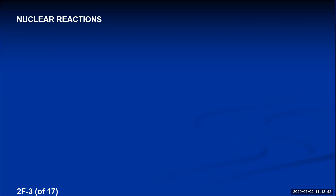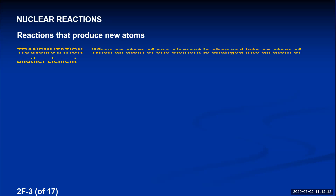Chemistry involves chemical reactions, which are how valence electrons of different atoms interact with each other. Nuclear chemistry involves nuclear reactions — changes that occur in the nucleus itself — producing different atoms. If you change the number of protons in the nucleus, you turn an atom of one element into another. This type of nuclear reaction is called a transmutation.